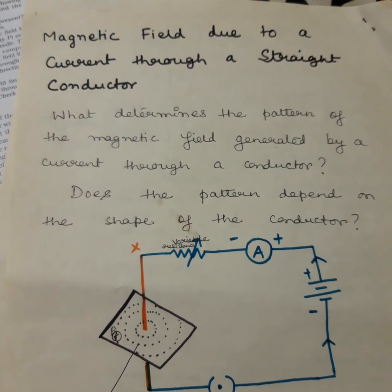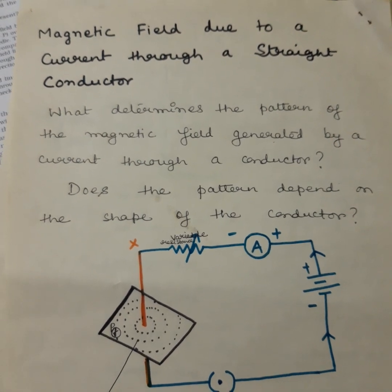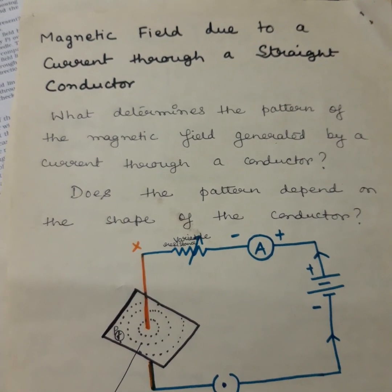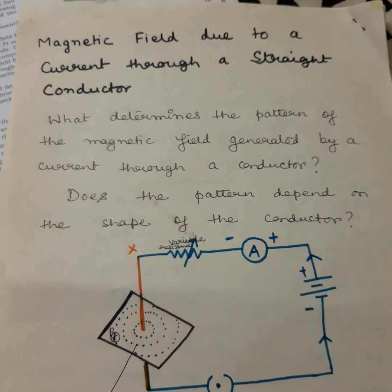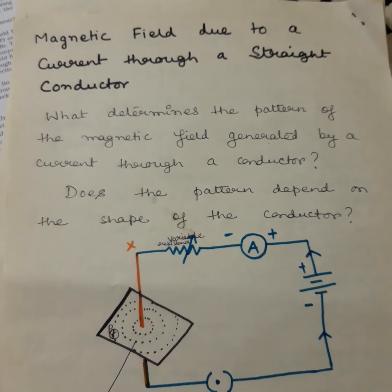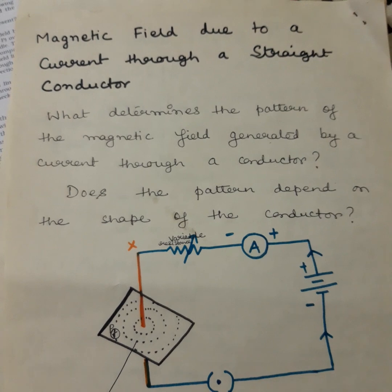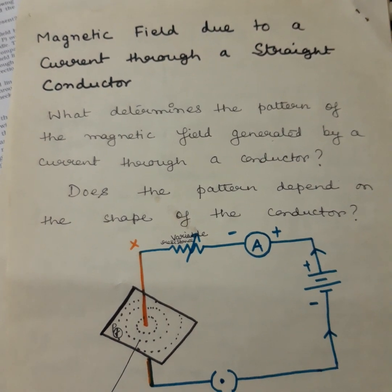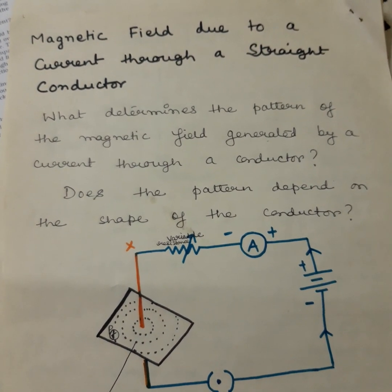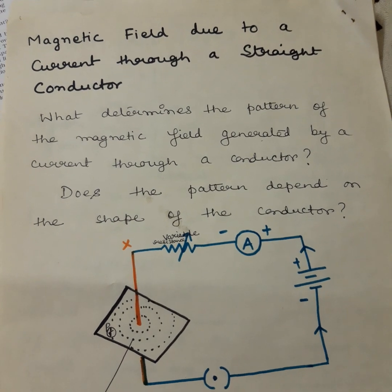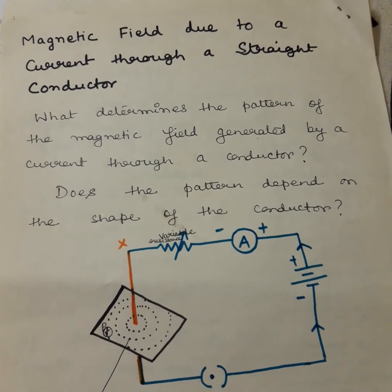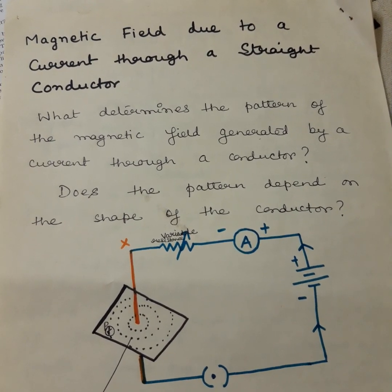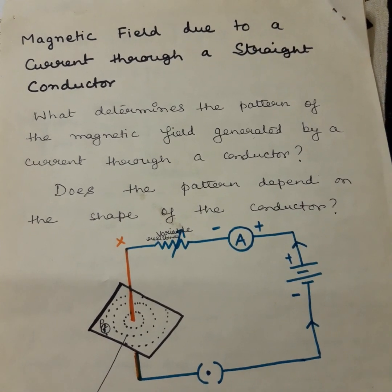Namashiva students. Today in our physics class we shall learn the pattern of the magnetic field due to the current through a straight conductor. Last day we already completed how the current-carrying conductor produces magnetic field around it. We also discussed electromagnets and permanent magnets. Now we shall learn about the pattern of the magnetic field generated by the current through a conductor.